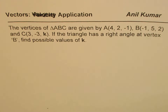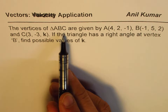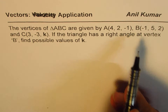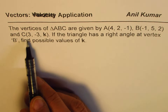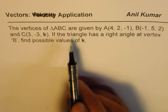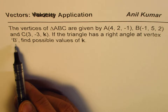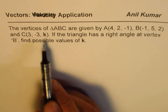I'm Anil Kumar and here is another question to review the concepts of vectors. The question is: the vertices of a triangle ABC are given by A(4, 2, -1), B(-1, 5, 2), and C(3, -3, K). If the triangle has a right angle at vertex B, find the possible values of K.